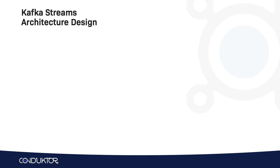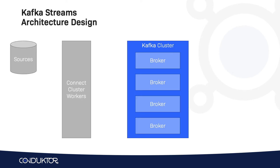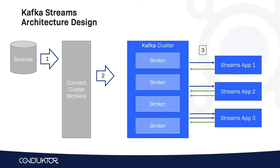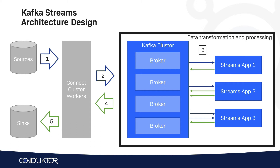If we look at our architecture, we have the sources, Kafka Connect, and then the data goes into a Kafka cluster. Now we're going to focus on the right-hand side of the diagram, which is to have a streams application that will take data in and out of Kafka. When done, we'll put the data back into a sink, into a target destination. So all the data transformation and processing happening on the right-hand side will be done using Kafka Streams.